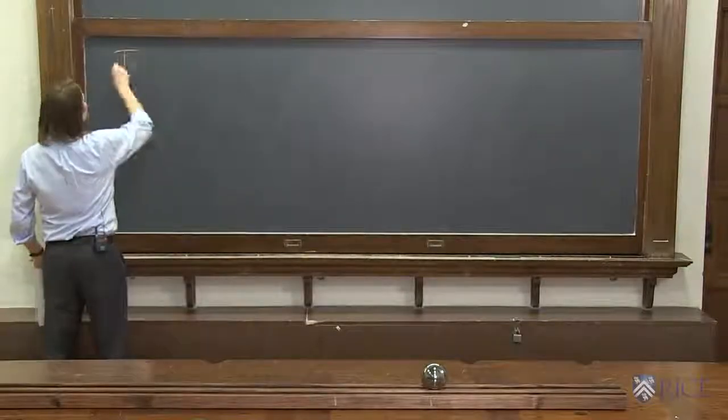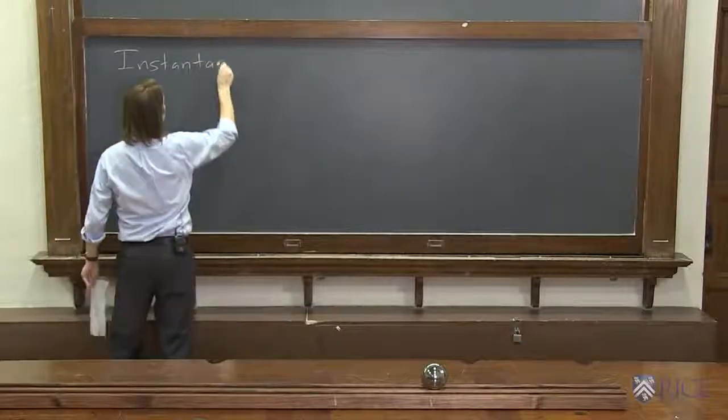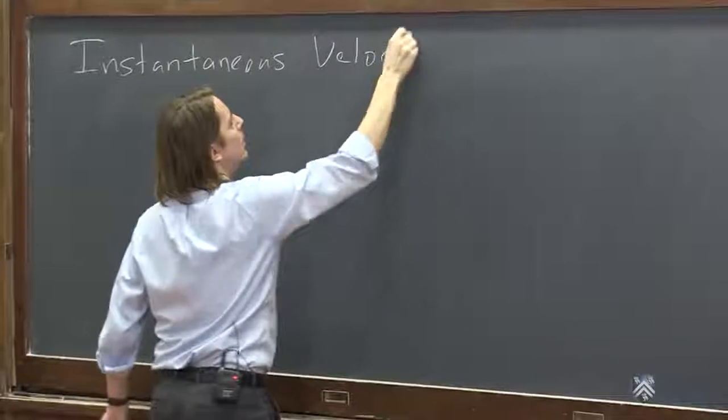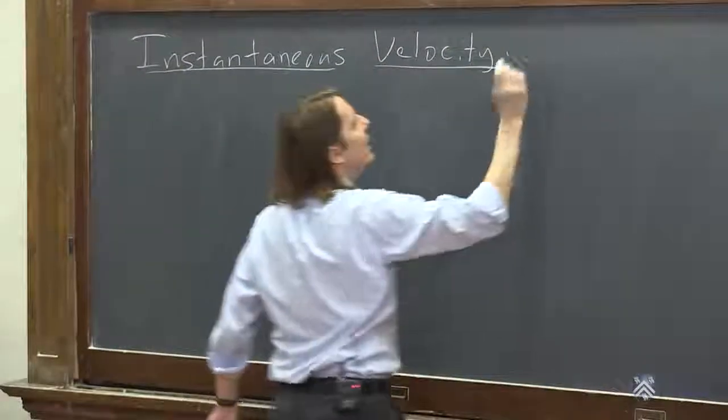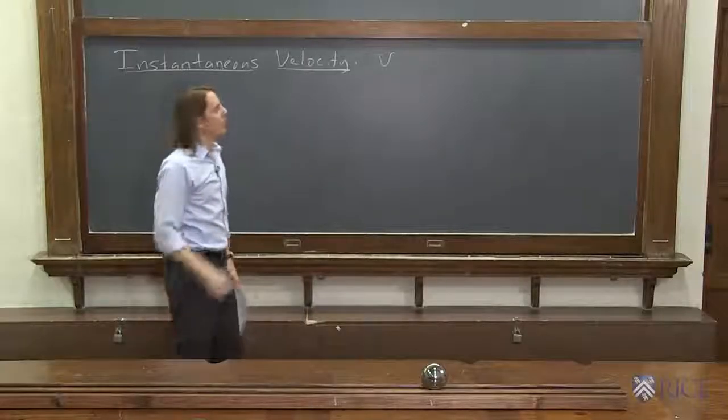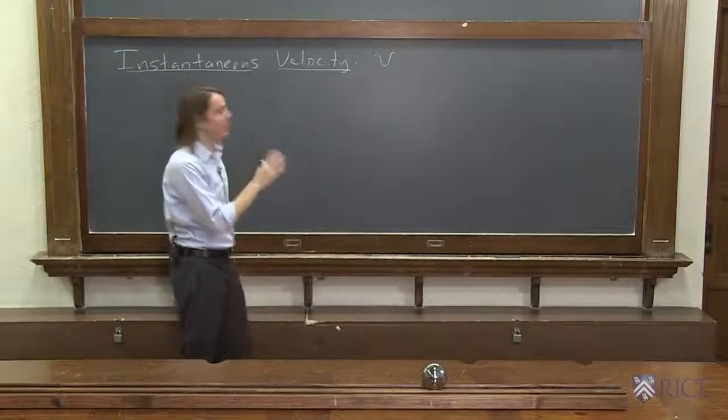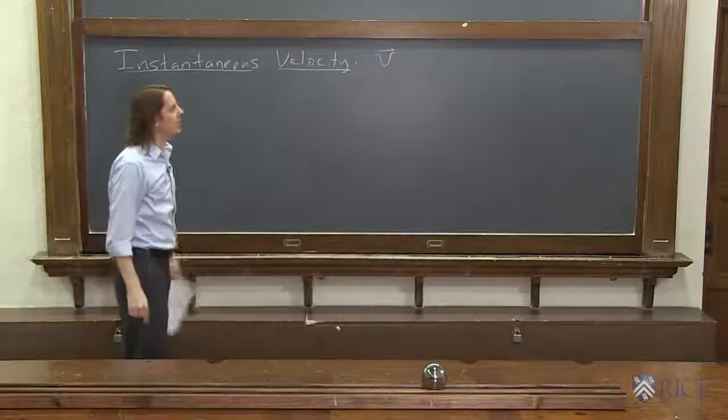And now another kind of velocity: instantaneous velocity. We will describe that with a cursive V, but we're not going to put AVG. There's no average subscript. When you see it with just the V by itself, with a vector, that means instantaneous velocity.